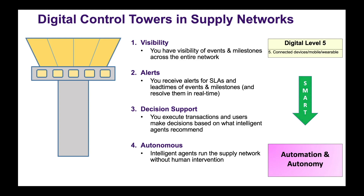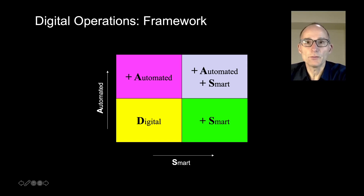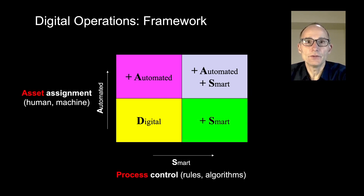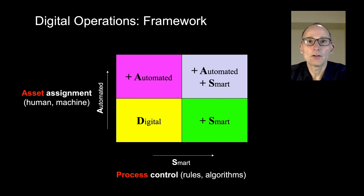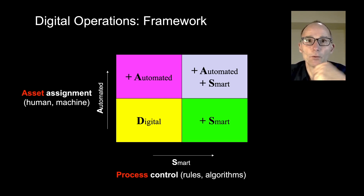Rather than having a seemingly linear progression, we believe it is insightful to distinguish smart control from automation. We can represent this in a simple 2x2 matrix. Taking digitization as given, we focus on two dimensions. On the horizontal axis, we increase the level of smartness embedded in the control rules that govern the operation. On the vertical axis, we focus on who is doing the work — is it human operators, or is it the machine or algorithm that performs the activities?